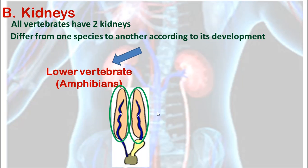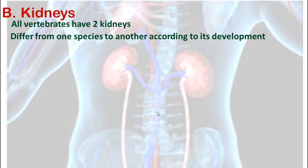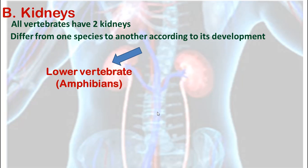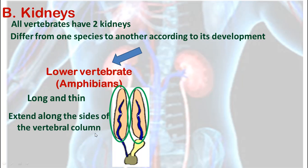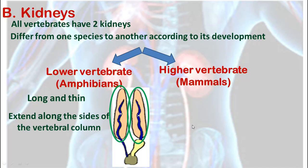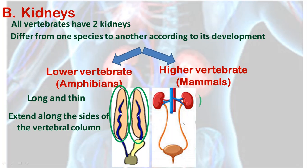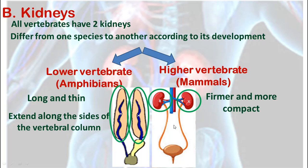All vertebrates have two kidneys. They differ from one species to another according to the development of these species. Lower vertebrates, such as amphibians, have long kidneys — they are thin, less developed, and they extend along the sides of the vertebral column. On the other hand, higher vertebrates, like mammals and humans, have more compact, more firm kidneys. They are smaller in size compared to the size of the animal, and they lie beneath the peritoneum.